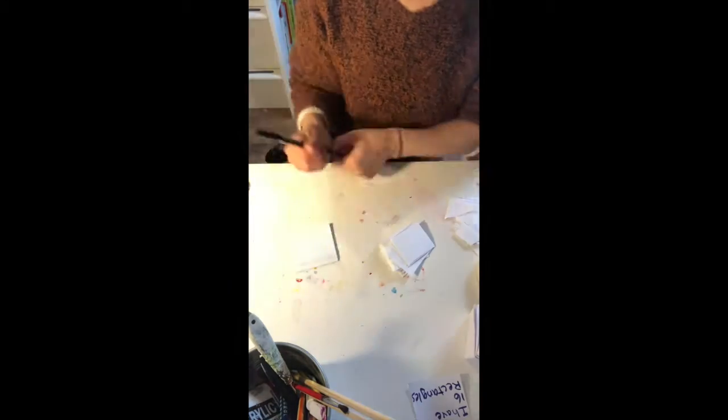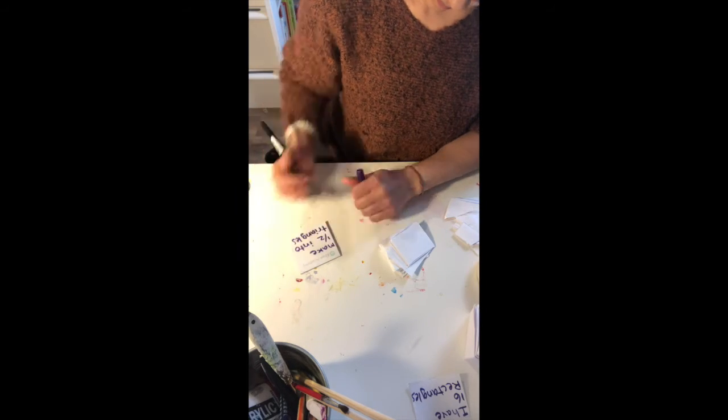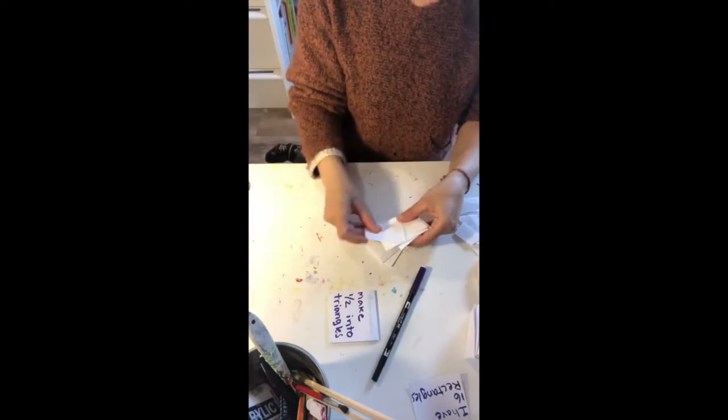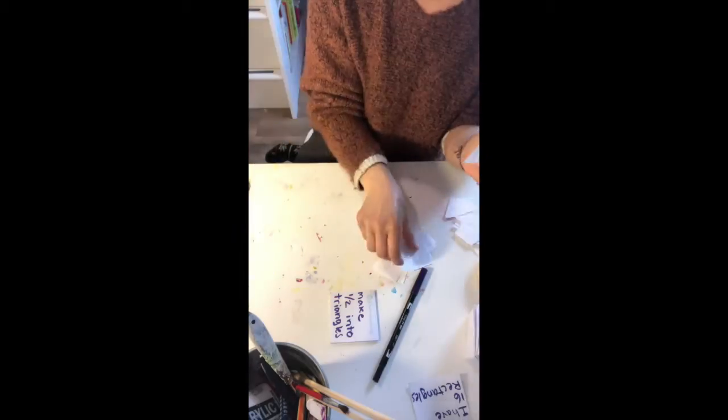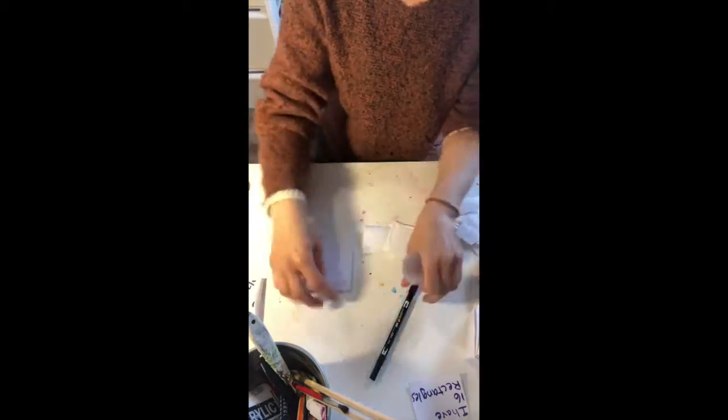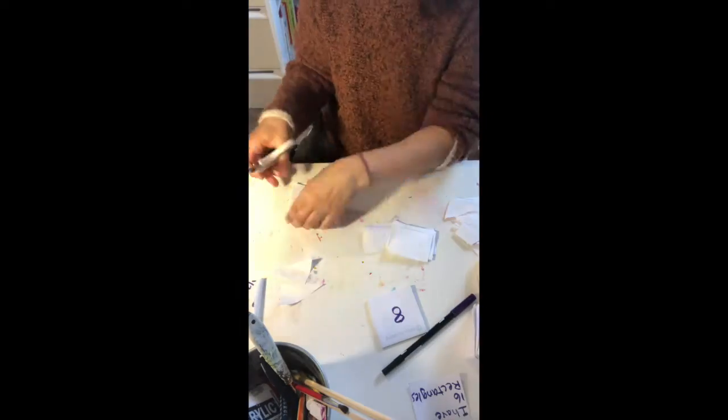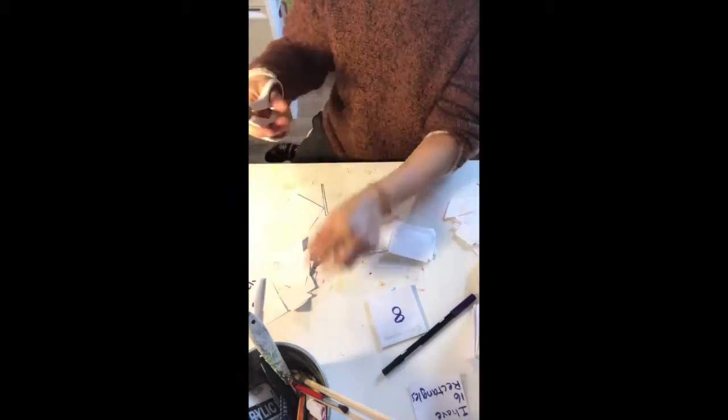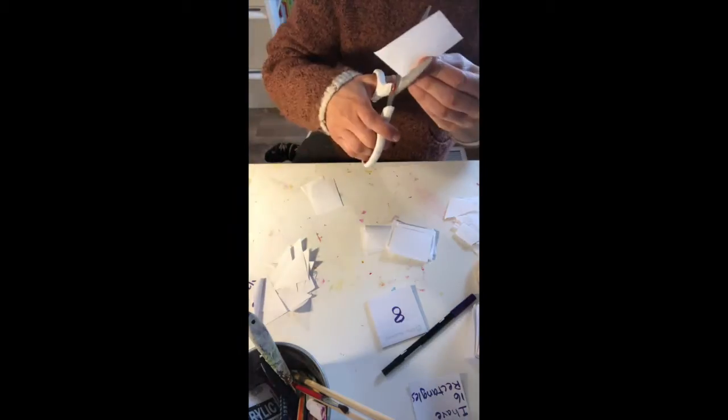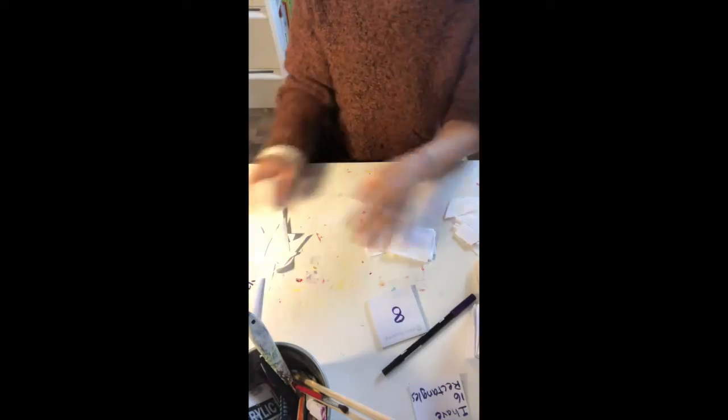Next, divide all of your rectangles in half so you have two piles. Take one of your piles and cut on the diagonal so that you have 16 triangles. So now you should have eight large rectangles and 16 triangles.